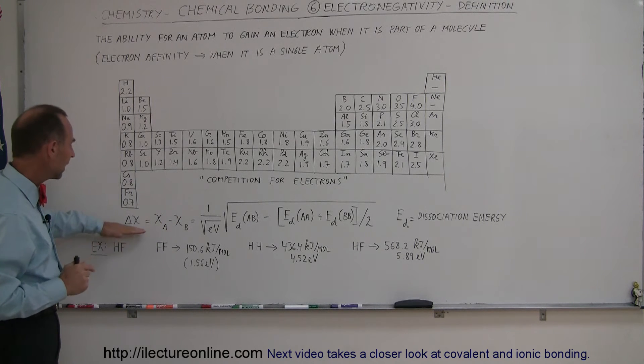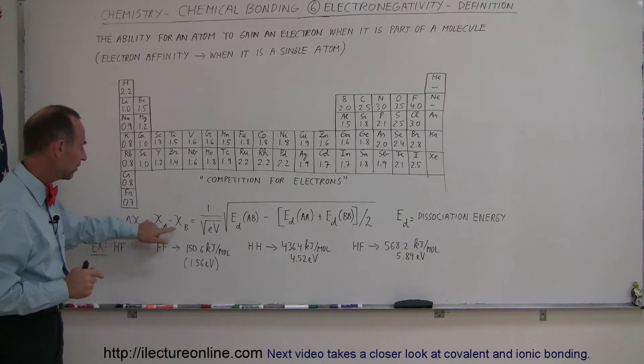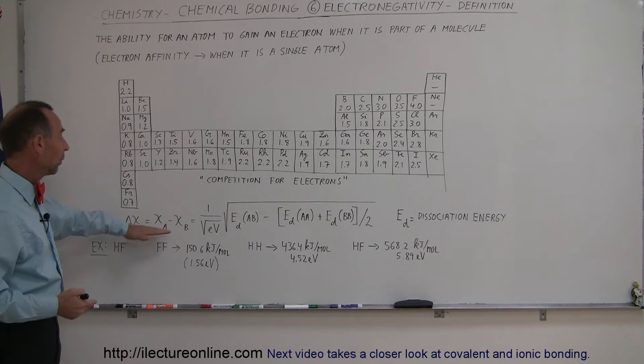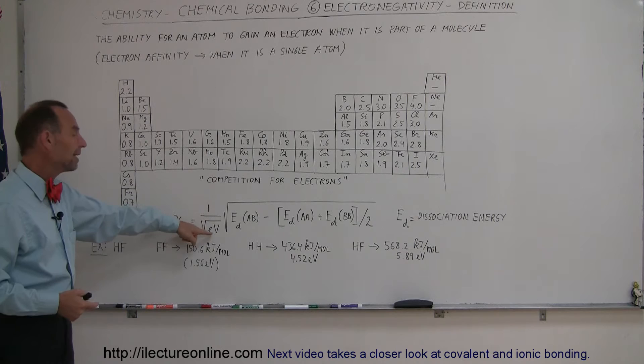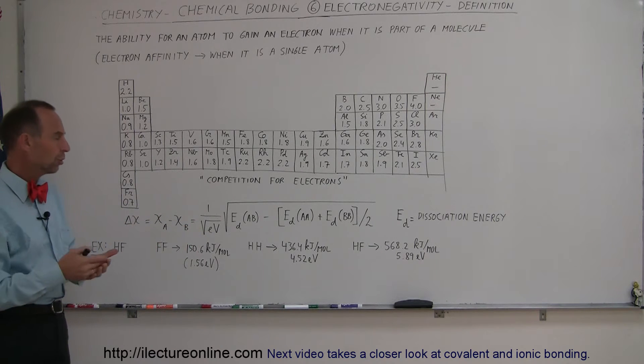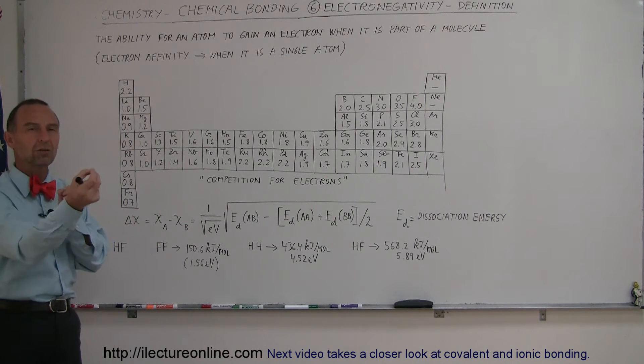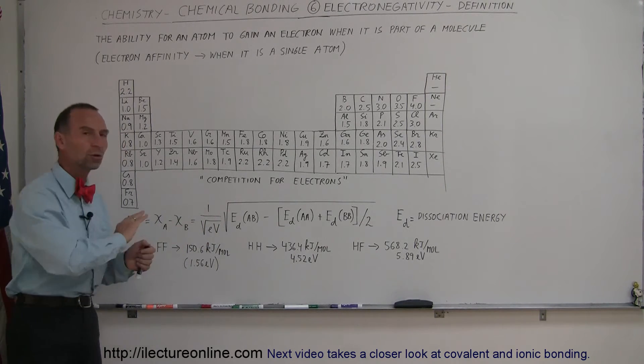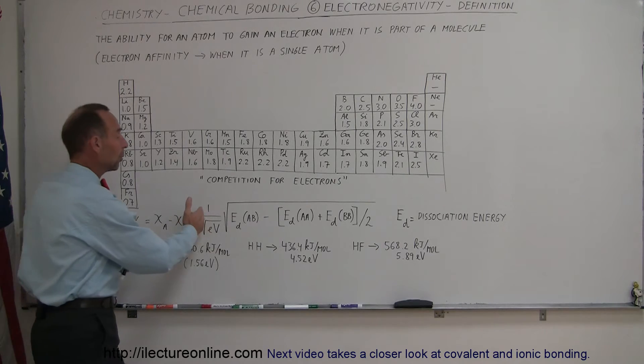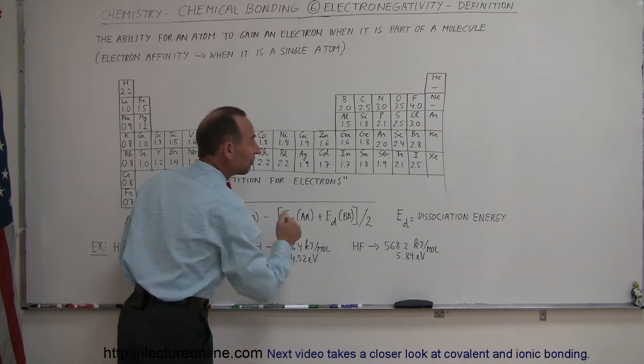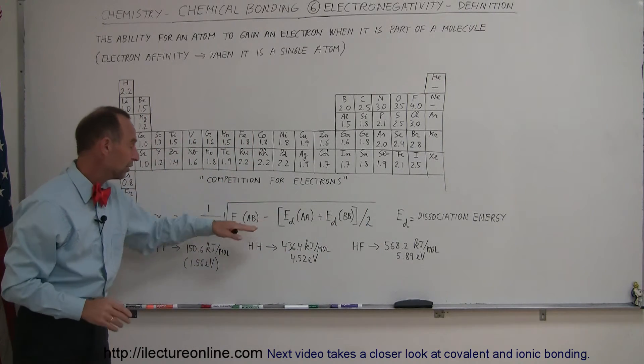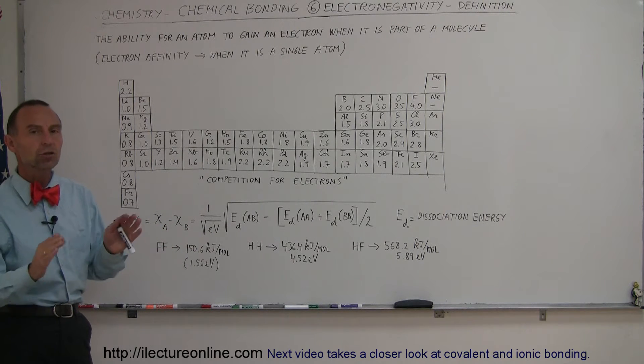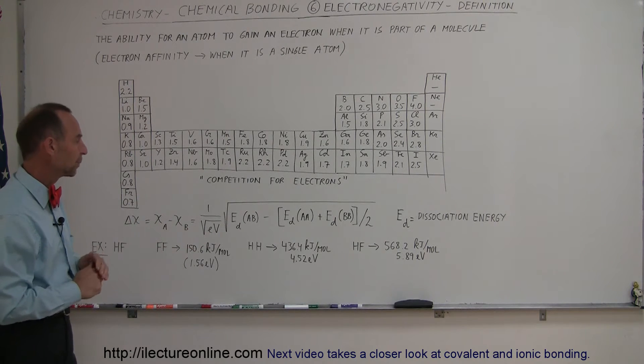And the way that's calculated then is the difference between electronegativity between two elements A and B. A and B could be any two atoms. Well, that's equal to 1 over the square root of EV. Now EV is the unit for electron volt, which is the energy by which an electron is pulled towards an atom. So this is just added to the equation in order to get rid of the unit, because we will come up with the square root of EV in units in the numerator, and we want to get rid of it by also putting in the denominator. So this is basically a unitless number of electronegativity.